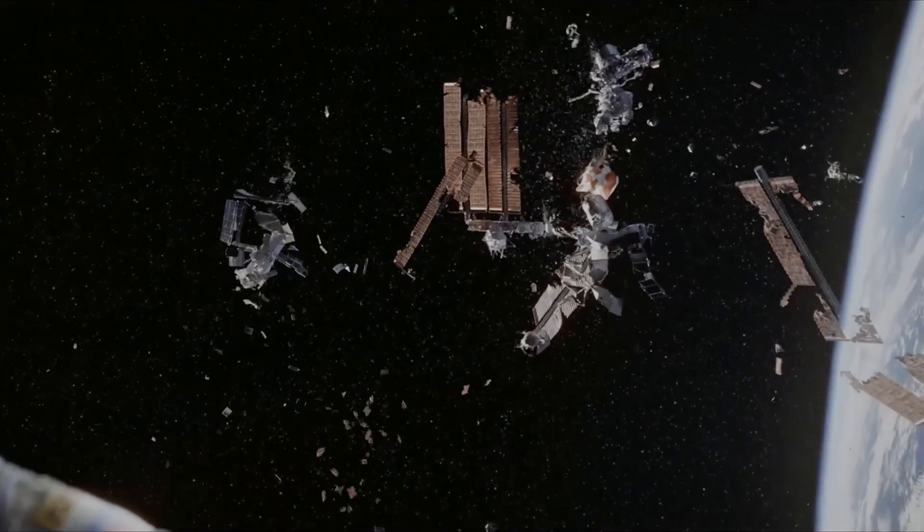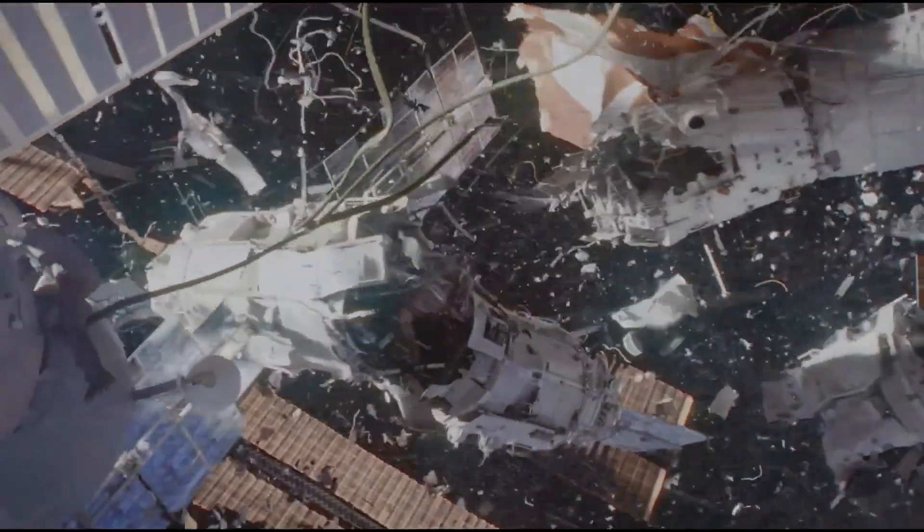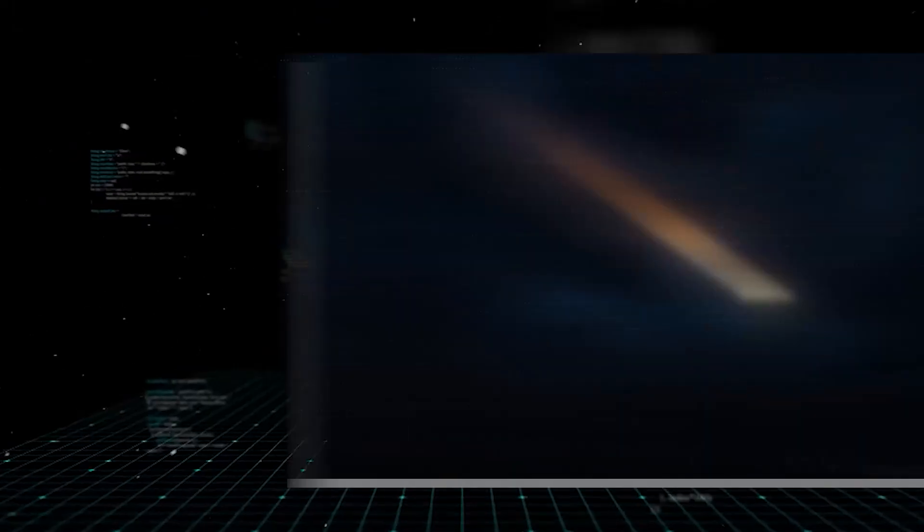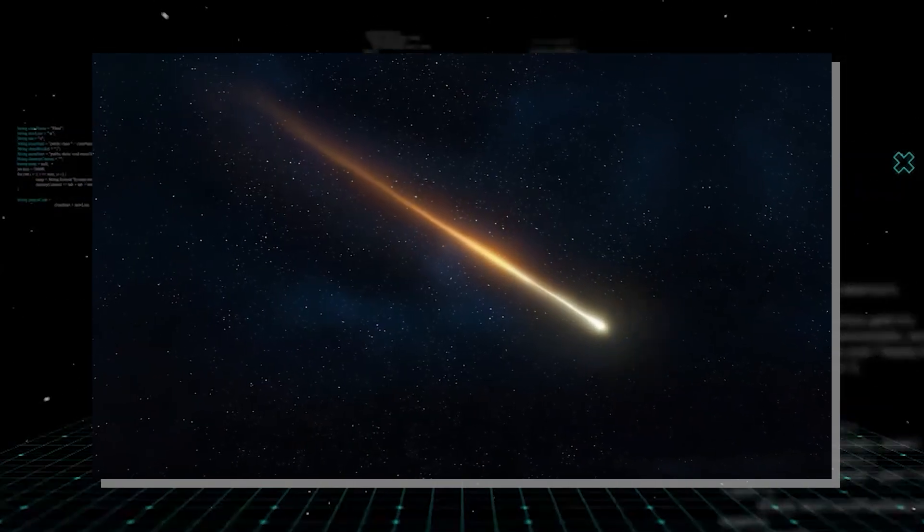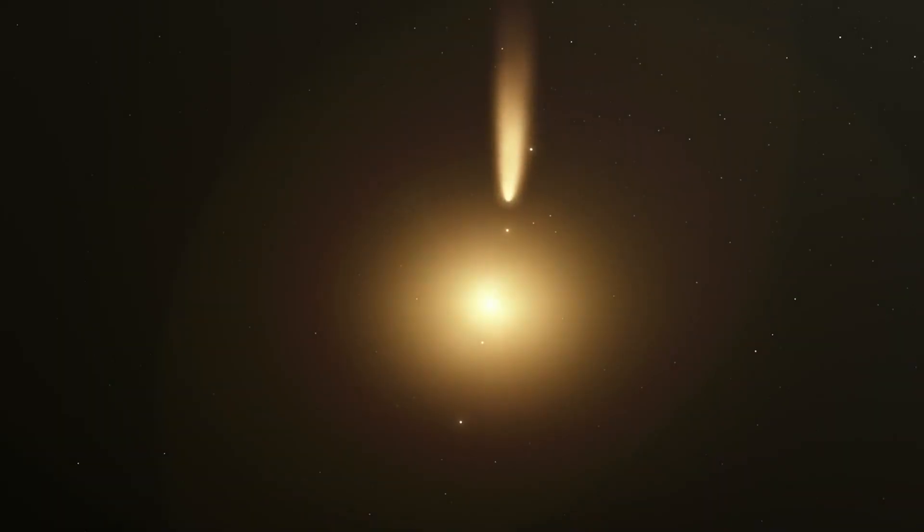This has led to concerns about the Kessler syndrome, a theoretical scenario where a cascade of collisions creates so much debris that parts of Earth's orbit become unusable. While 3I Atlas was natural, its sudden, fast approach underscored the vulnerabilities of our orbital infrastructure to any unforeseen event, regardless of its origin.